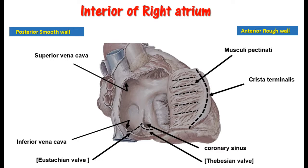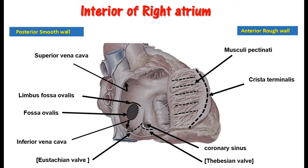Then we have the oval depression on the septal wall known as the fossa ovalis. And above the fossa ovalis we have the thick ridge that is known as the limbus fossa ovalis.